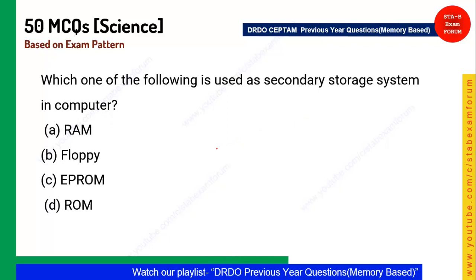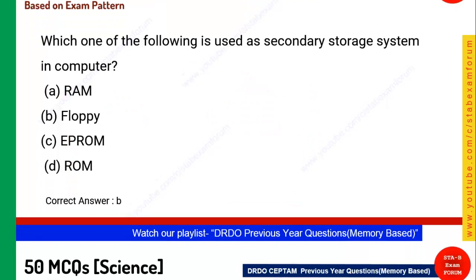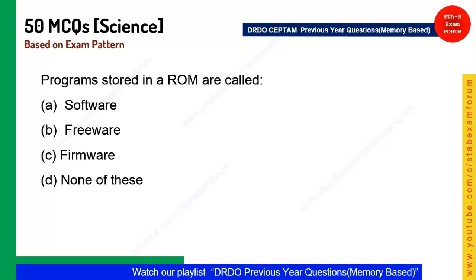Next question: Which of the following is secondary storage? There are two types of memory — primary (main) memory, which includes RAM, EPROM, and ROM, and secondary memory, which includes external storage like floppy disks and hard disks. Floppy is one example of secondary storage.